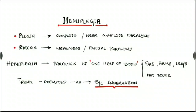What is Plegia? Plegia means a complete or near complete paralysis. What is Paresis? Paresis is weakness or partial paralysis. So what is meant by Hemiplegia? It is the paralysis of one half of the body — that is face, arms, and legs — but not the trunk.